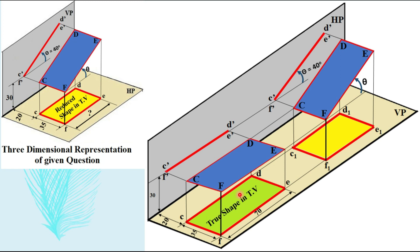Step three says draw the opposite view, so we draw the front view next. Step four says draw the same front view again adjacent to it, but now considering the angle theta equals 40 degrees. Step five says lastly draw the opposite view — that is the reduced shape top view.